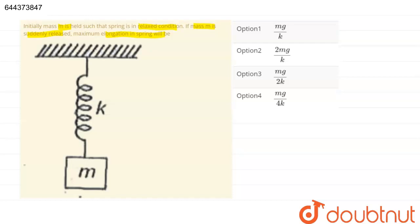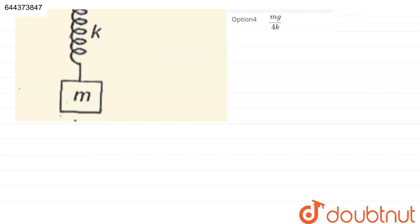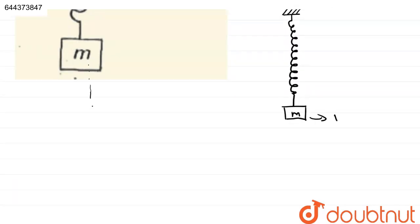Initially, it is at rest and unstressed position. After it is released, suppose it has covered the distance. Suppose this is the spring, after release, suppose it came here, suppose this is the mass M. At the maximum elongation, the velocity will be 0. This is the key concept.